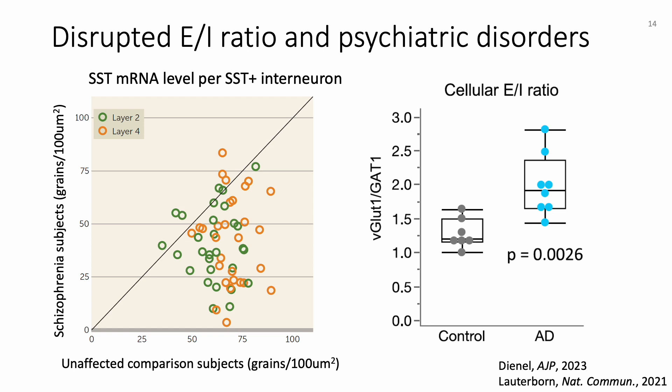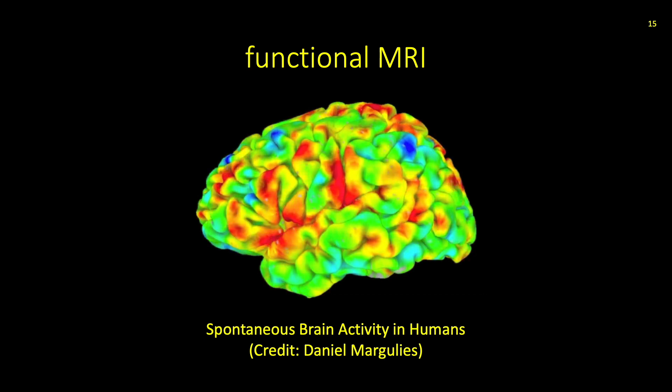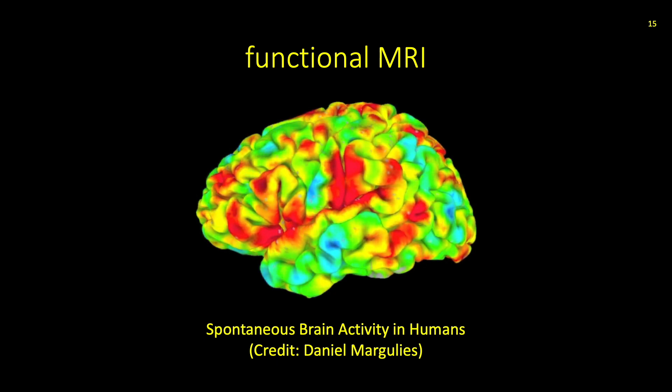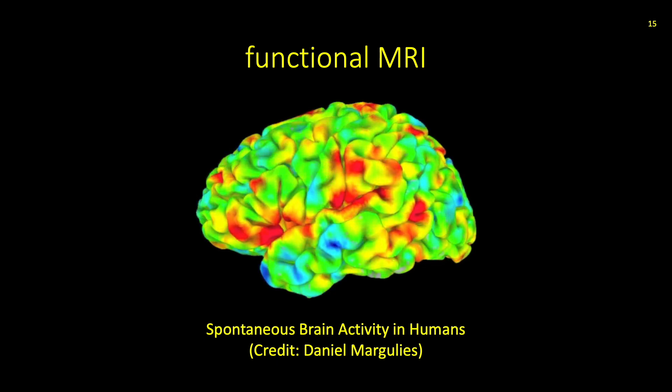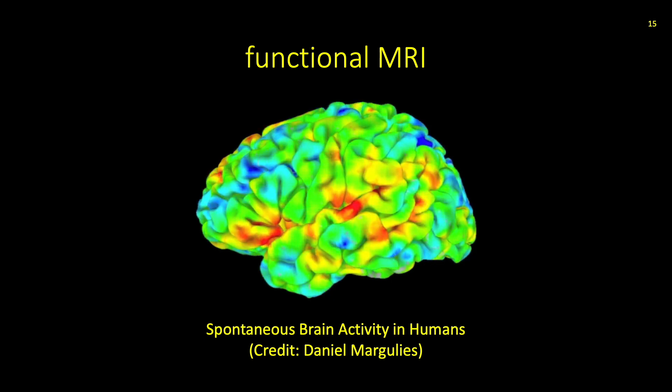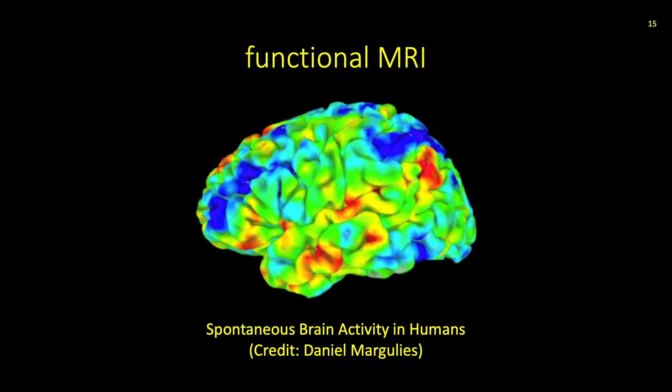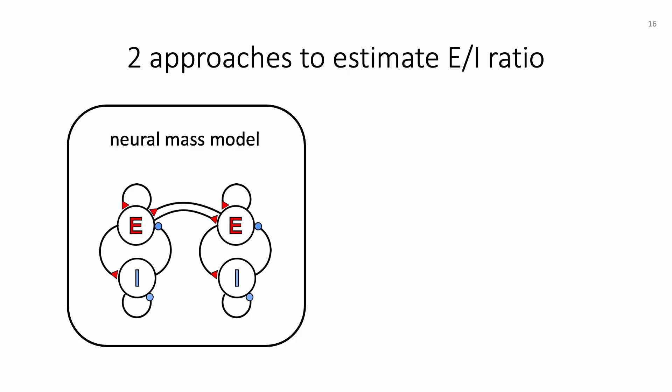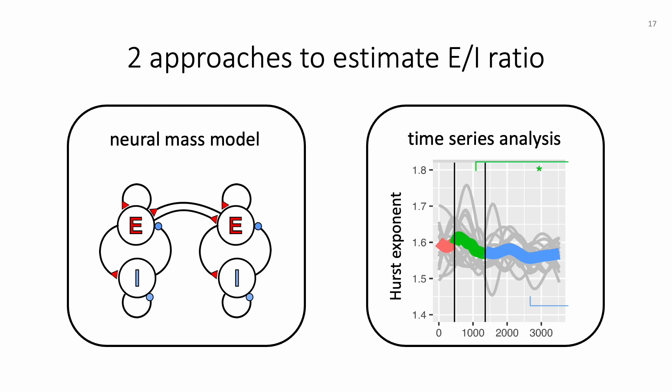For the rest of this talk, I will mainly focus on how to estimate EI ratio using functional magnetic resonance imaging, or fMRI data. This video shows the spontaneous activity of a human brain imaged with fMRI. The fluctuations of the signal reflect blood oxygenation level, which is associated with underlying metabolic processes and neuronal activities. I will outline two different frameworks to estimate EI ratio in vivo: first, the neural mass model, which directly models the dynamics of neuronal excitation and inhibition; and second, a time series analysis to estimate EI ratio based on temporal features of fMRI data.